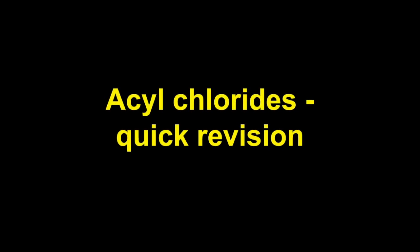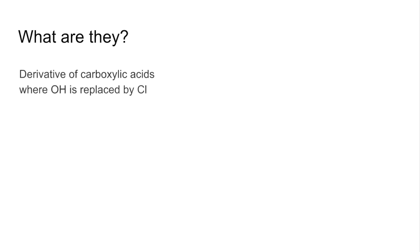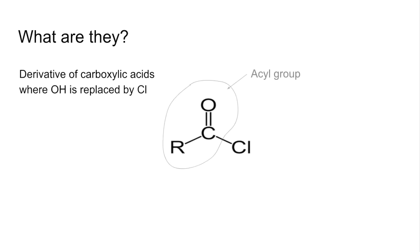Quick revision video on acyl chlorides, also known as acid chlorides. We'll start by looking at what they are: derivatives of carboxylic acids where the OH group has been replaced by a chlorine atom. In general terms they look like this, and they're called acyl chlorides because this part here is an acyl group, the RC(O)Cl.